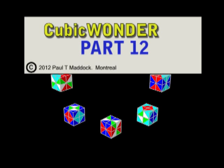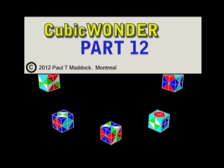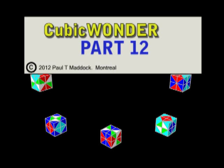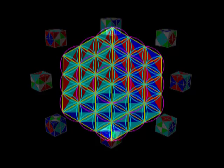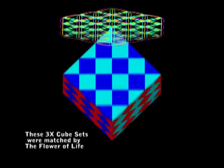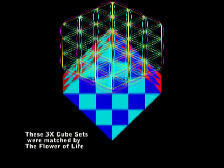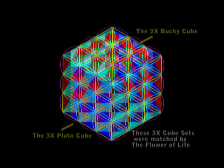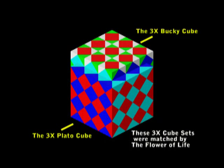Hi, this is Paul again. Now for part 12 of Cubic Wonder. In my last video, I showed that the Flower of Life seemed to show that the 3x, that's the 3x3x3 cube arrangement, seemed to be the most important. And it applied to both the Bucky and the Plato cubes.